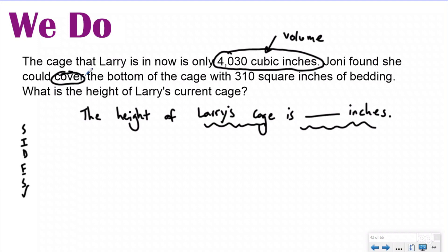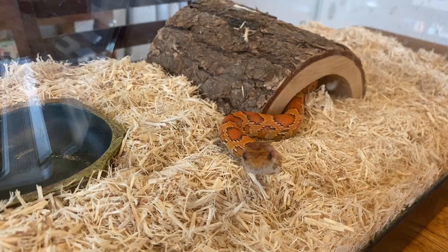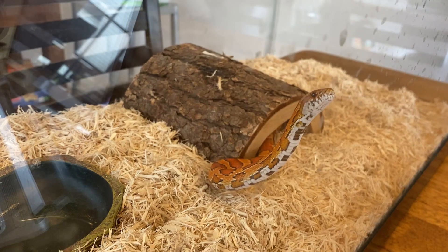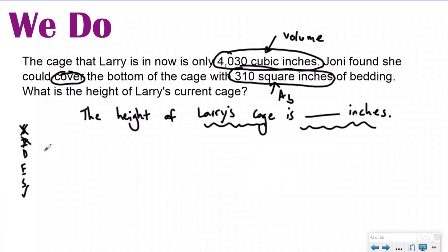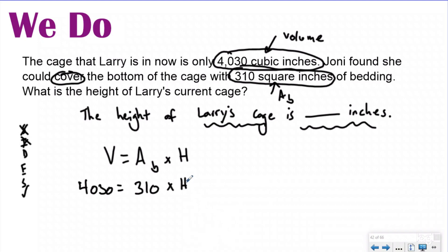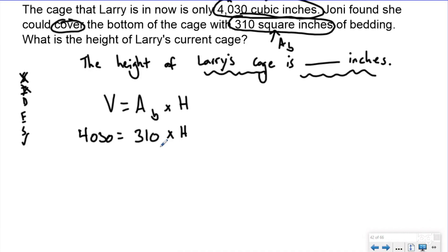Joanie found she could cover the bottom of the cage with 310 square inches of bedding. I know this is the area of my base because it is square units — area of the base is the only thing that's squared, and we're covering the bottom of the cage. Because of my statement and my identify step, I know this is a volume question. So I write down my volume formula. I know the volume is 4,030, the area of the base is 310, and I don't know the height — that's what my statement is asking for.